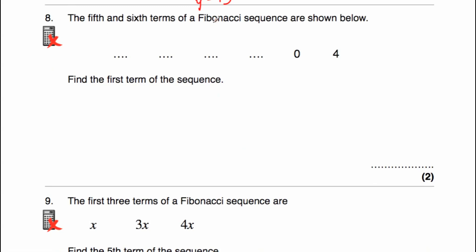Question number 8 says the 5th and the 6th terms of a Fibonacci sequence are shown below. We've got 0 as the 5th term and 4 as the 6th term, and we've been asked to find the first term. This number plus 0 is equal to 4, so that must be 4. Now to get 0, this number plus 4 is equal to 0, so the number must be negative 4 because negative 4 plus 4 is equal to 0. Moving backwards to get our 4, this number plus negative 4 is equal to 4, so this number must be 8. And finally, to get the first number, that's going to be the first number plus the second number equal to negative 4. We've got 8 and we've got to get to negative 4, so this must be negative 12. So the first term is negative 12.